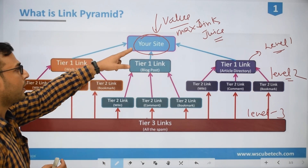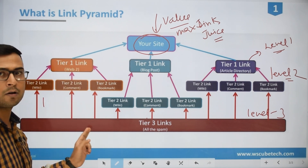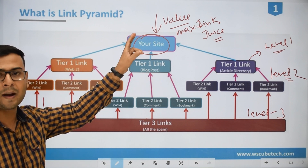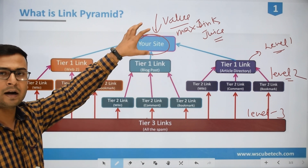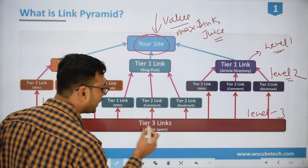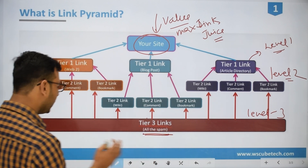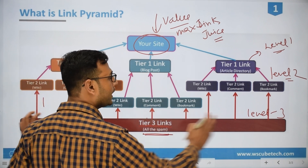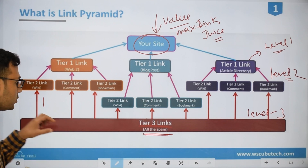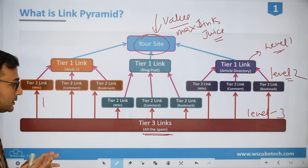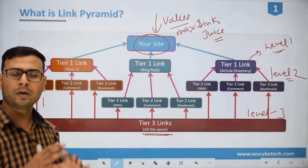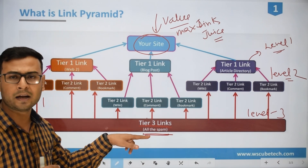If we directly link our website from a very low quality backlink, that will actually be counted as spam — it will not transfer any value to our website. So what we are going to do is: we have tier 3 links over here, which are all spam. We will be having a very large number of tier 3 links at this ground level. This will contain a very high number of links — tier 3 links which can be spammed, very obvious and very normal kinds of links. These are not very high quality links.